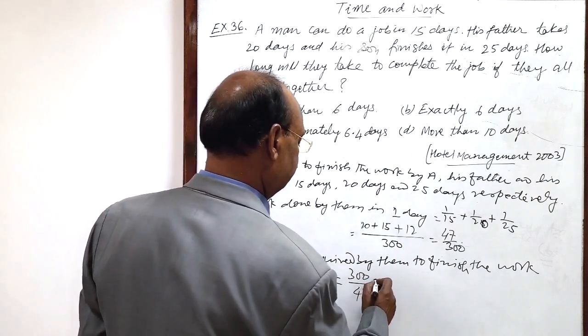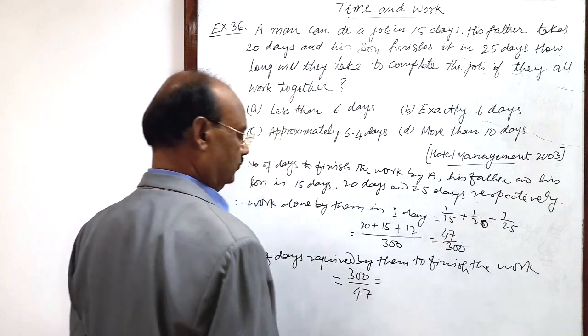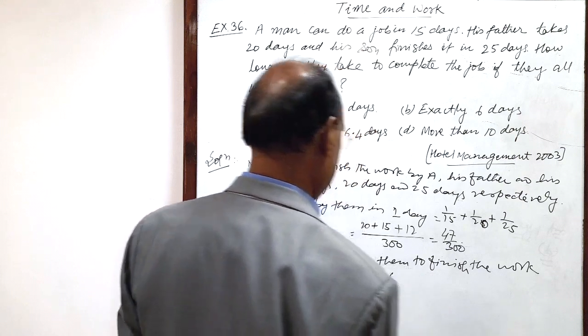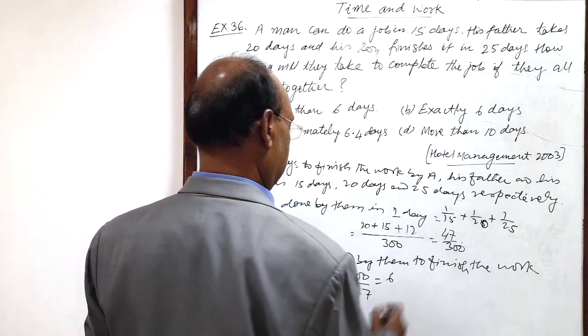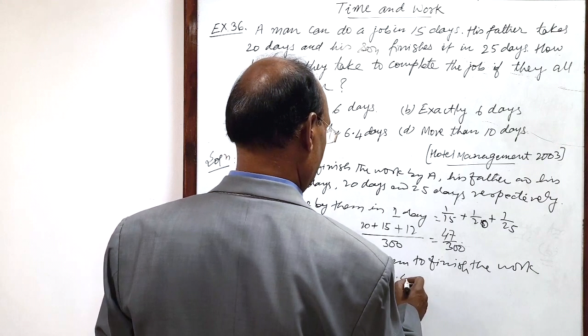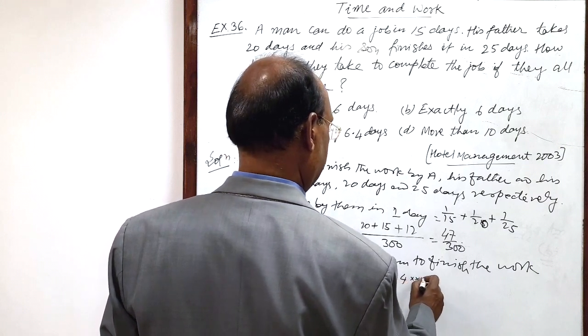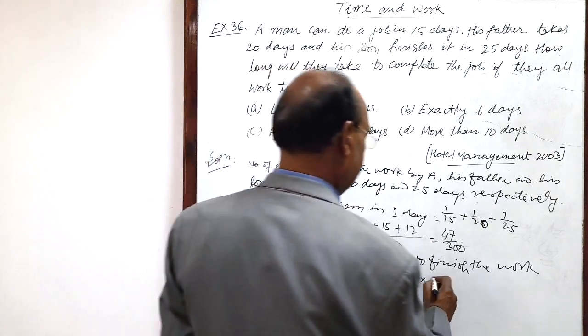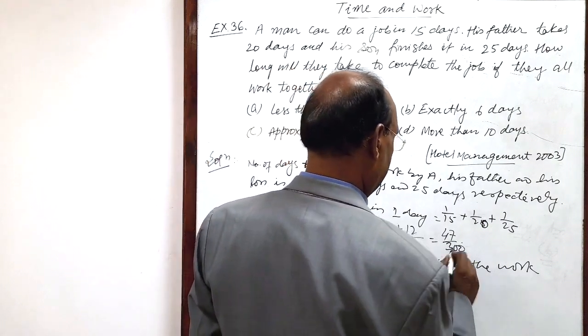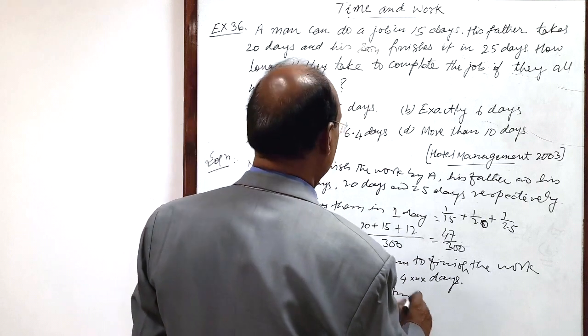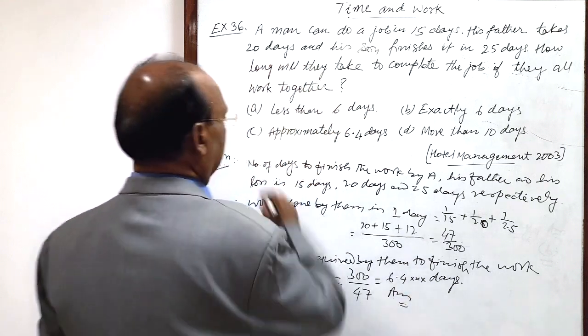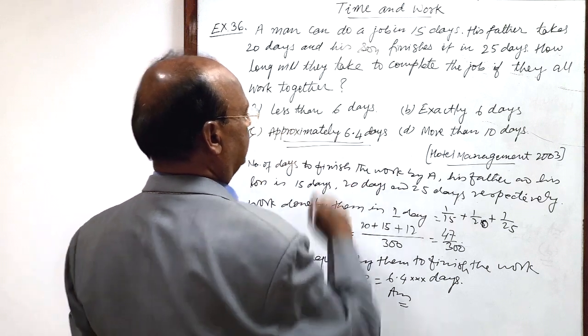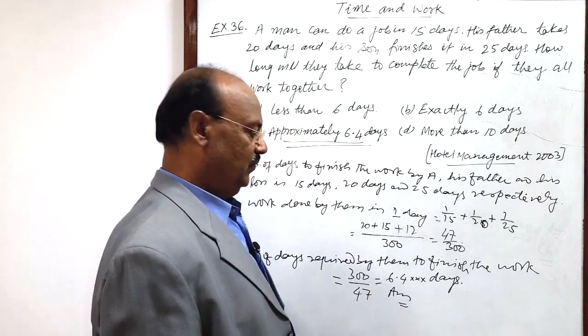Let us simplify it, 6.4 and there will be some more digits there. These many days are required. This is the answer and which option is correct? Option number C, approximately 6.4 days. This is the answer.